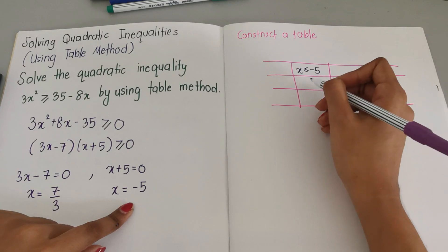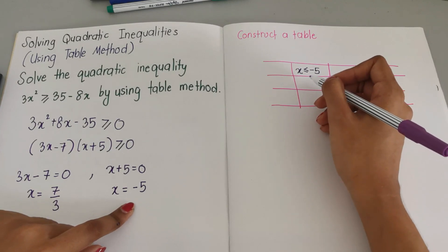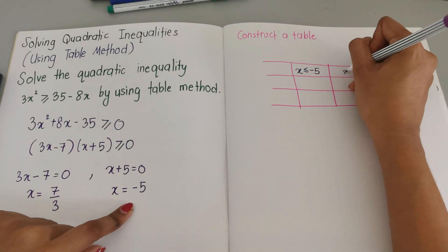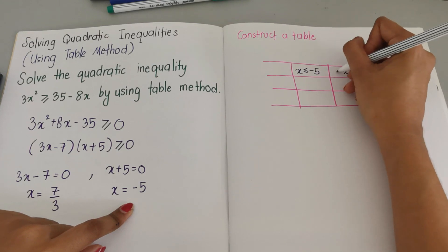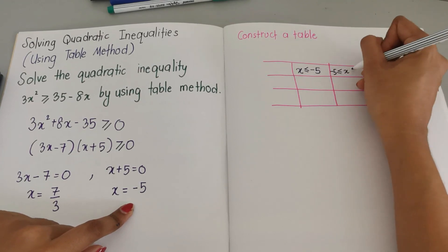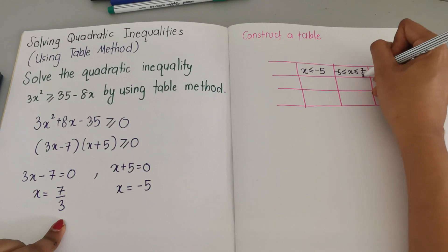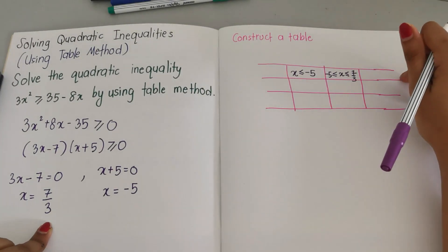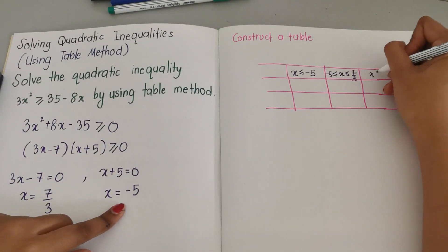If you get a negative factor you're going to write it here and write this as less than and equal to. Next one will be x between negative 5 and between 7 over 3.